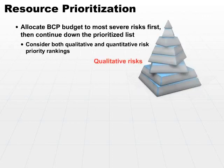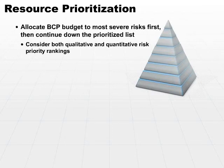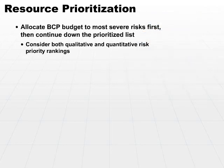Consider both qualitative and quantitative risk priority rankings. Not only are we supposed to cover the risks that are going to cause big money damages to us, but also make sure you cover the risks that could cause loss of customer trust, because that may have even more of a long-term effect.